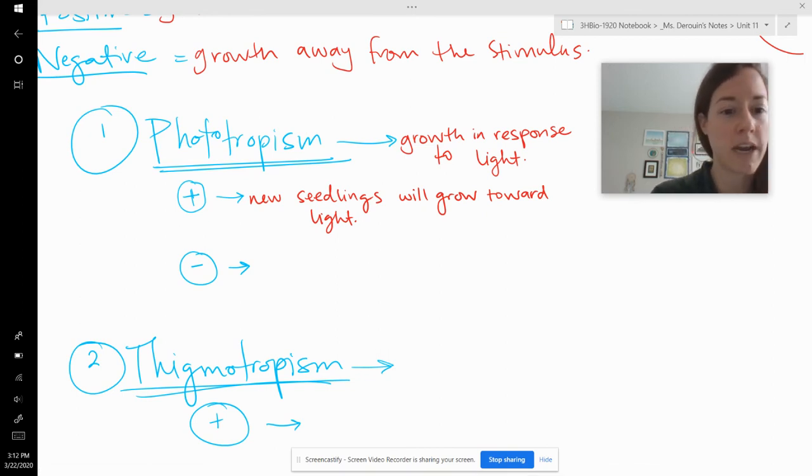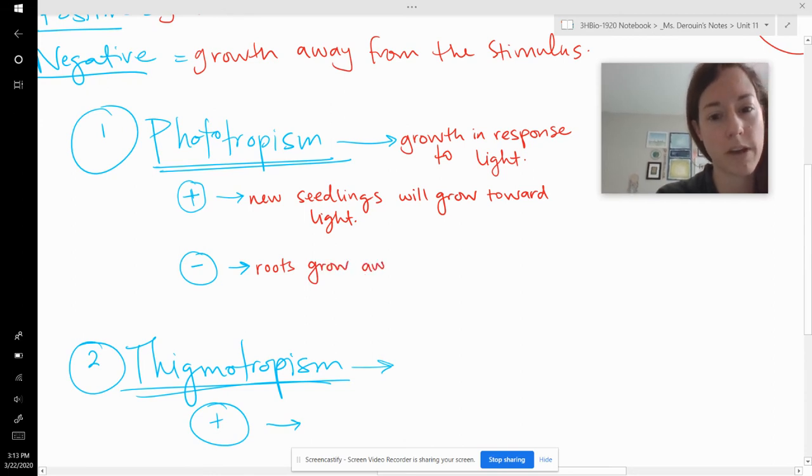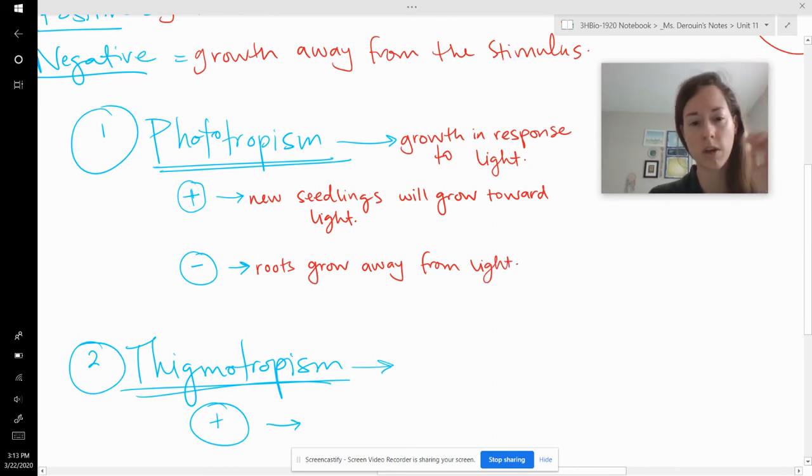Negative phototropism is that roots grow away from the light. So they will grow, if you shine light on them, they'll turn away. Okay. That's phototropism, response to light.